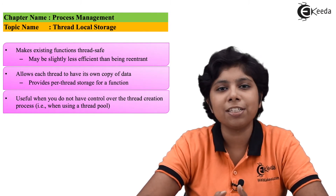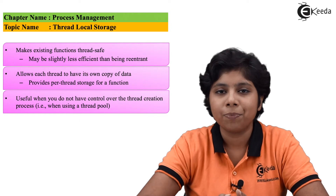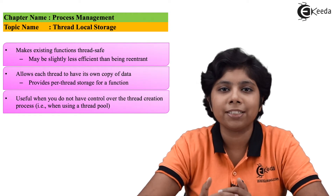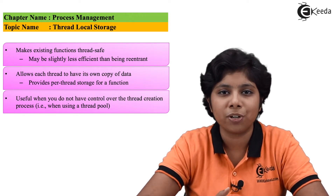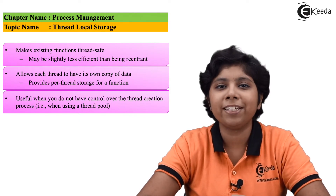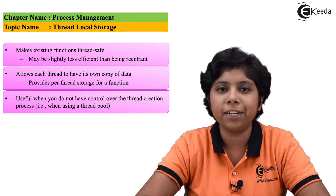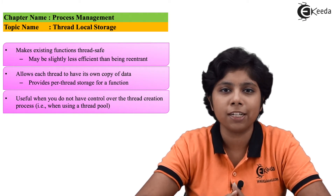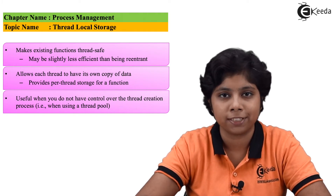Thread local storage is very similar to static data, but the key difference is that thread local storage provides unique data to each thread, whereas static data provides common data for all threads and common functions for all processes.